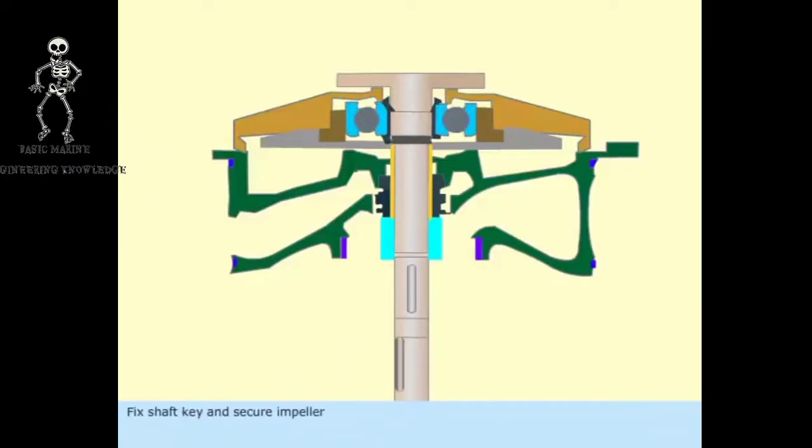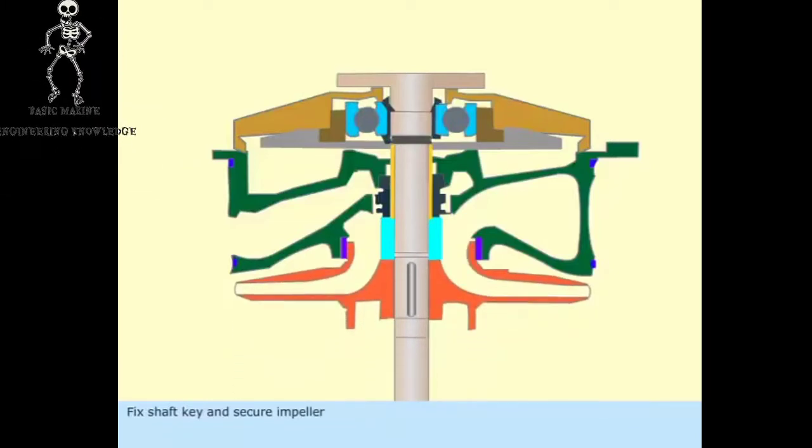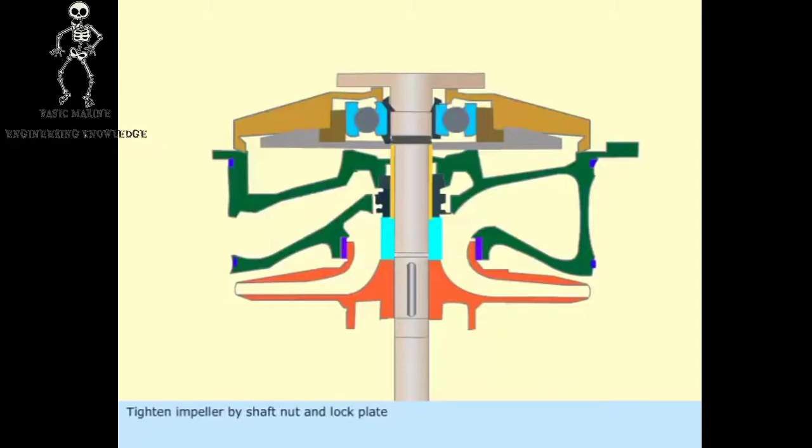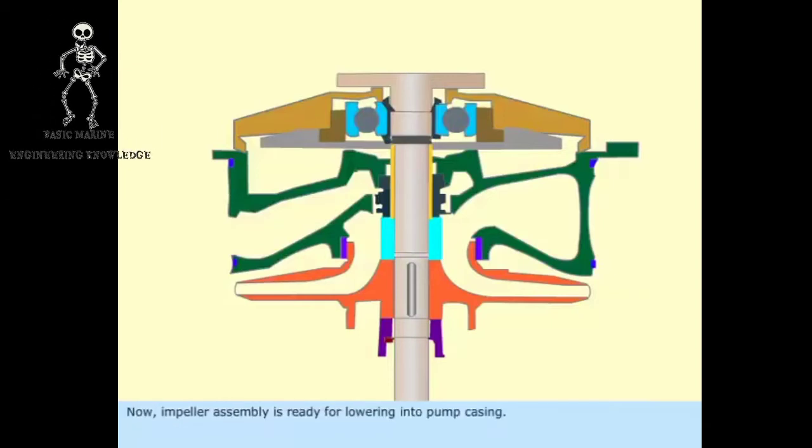Fix shaft key and secure impeller. Tighten impeller by shaft nut and lock plate. Now impeller assembly is ready for lowering into pump casing.